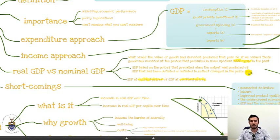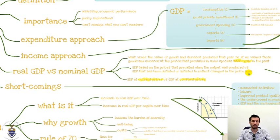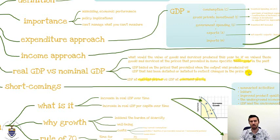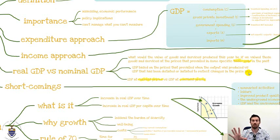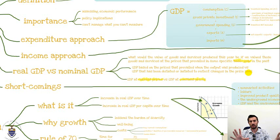If prices have increased between the year 2000 and 2012 — that is, we've had inflation — then the monetary value of output in 2012 is going to be different from the monetary value in 2000. Even if the same amount of output was produced in both years, the value in 2012 will be more simply because of inflation. So to compare output in 2012 to output in 2000, we have to take the 2012 output and adjust it for inflation.